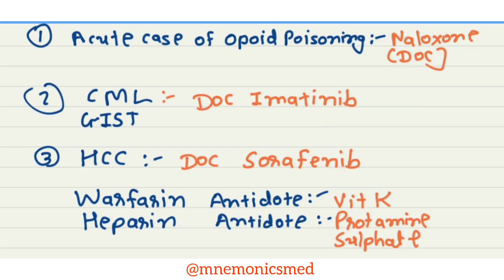First we will learn about acute case of opioid poisoning. Drug of choice is Naloxone.